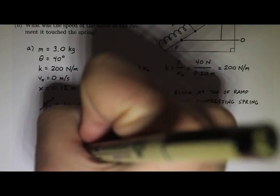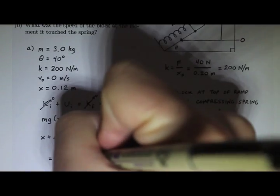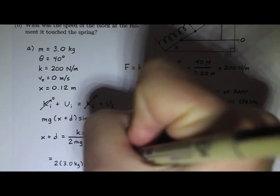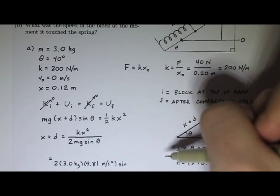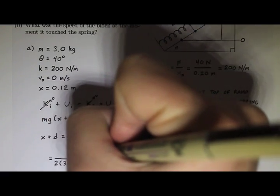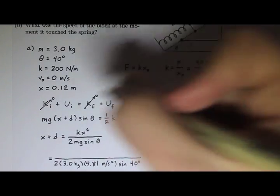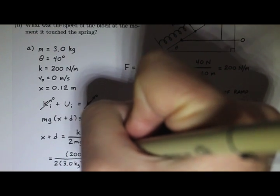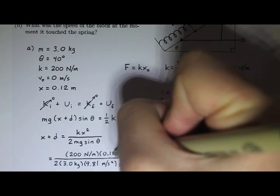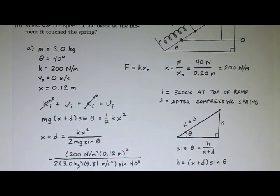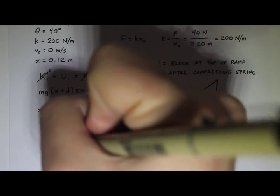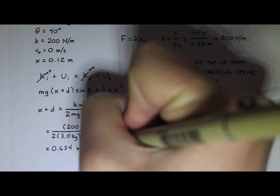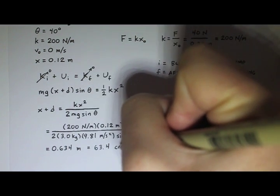Now, I can plug in. I think I know what all of these things are. So, it's two times the mass of three kilograms. G is 9.81 meters per second squared. And then the sine of 40 degrees. And then up top, I have K is 200 newtons per meter. And X is 0.12 meters. And that's squared. And so, now I can calculate that and get my final answer. And for X plus D, if you calculate it, you get 0.634 meters, which is 63.4 centimeters.